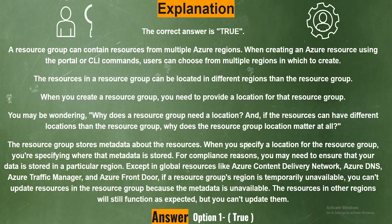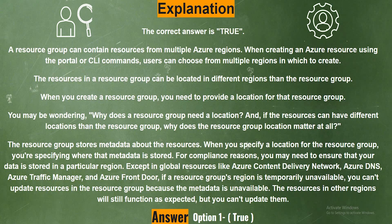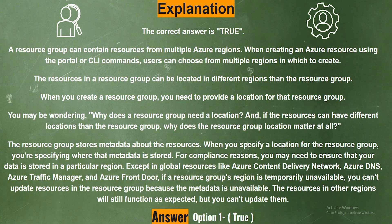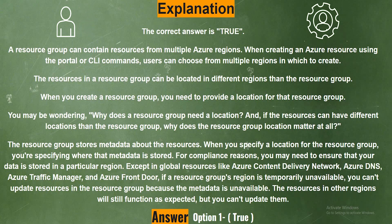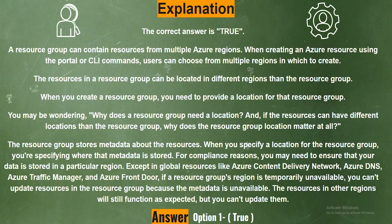When you create a resource group, you need to provide a location for that resource group. You may be wondering: why does a resource group need a location, and if the resources can have different locations than the resource group, why does the resource group location matter at all? The resource group stores metadata about the resources. When you specify a location for the resource group, you are specifying where the metadata is stored. For compliance reasons, you may need to ensure that your data is stored in a particular region. Except in global resources like Azure Content Delivery Network, Azure DNS, Azure Traffic Manager, and Azure Front Door. If a resource group's region is temporarily unavailable, you can't update resources in the resource group because the metadata isn't available. The resources in other regions will still function as expected, but you can't update them.